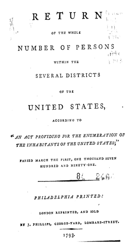OMB defines the concept of race as outlined for the U.S. Census as not scientific or anthropological, and takes into account social and cultural characteristics as well as ancestry, using appropriate scientific methodologies that are not primarily biological or genetic in reference. The race categories include both racial and national origin groups.